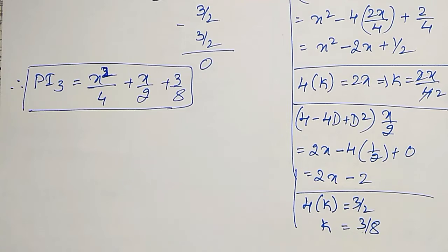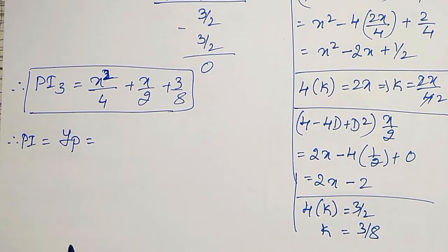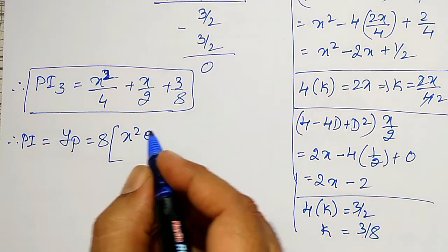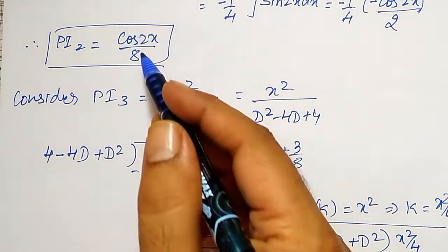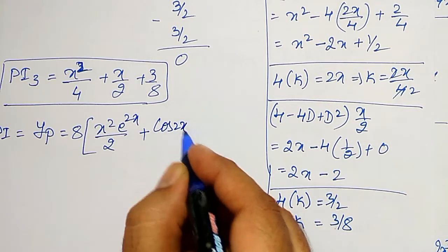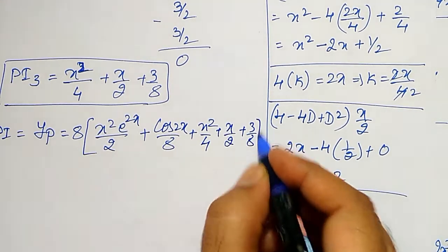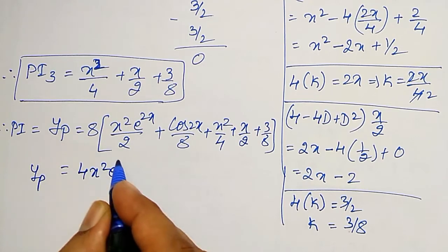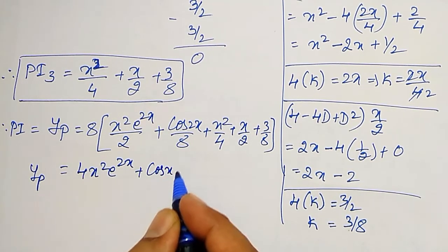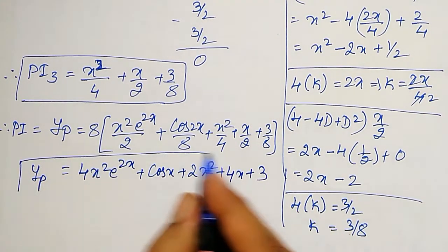Then, using all these PIs, I will write the particular integral. Therefore, particular integral YP is equal to 8 times (PI1 plus PI2 plus PI3). Multiplying 8 inside: 4x squared · e to the power 2x plus cos 2x plus 2x squared plus 4x plus 3 is the required particular integral.